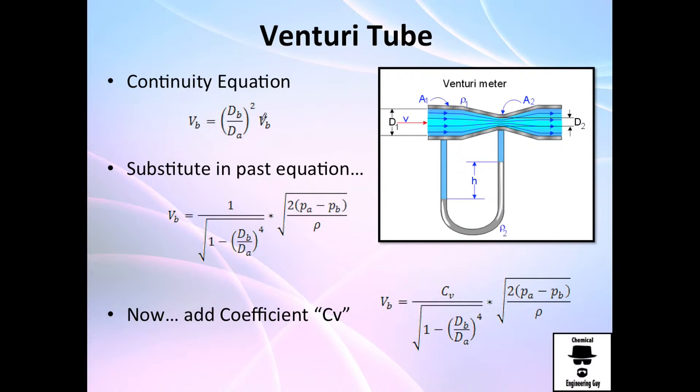Recall that we can relate this. Velocity on A equals the diameter's ratio to the square times the actual velocity in the throat.